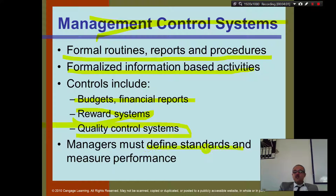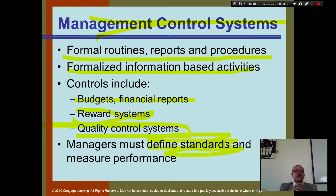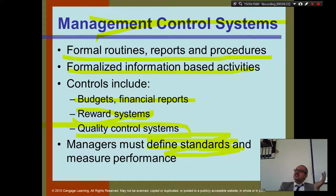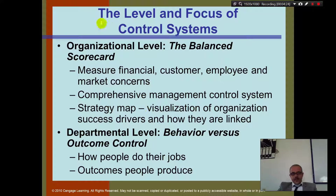Managers must define standards. For example, LIU students have to get at least 60% to pass. If you're below 60, it will show on the system as F and you can't take the next course. That's another control — and this is the standard we set.